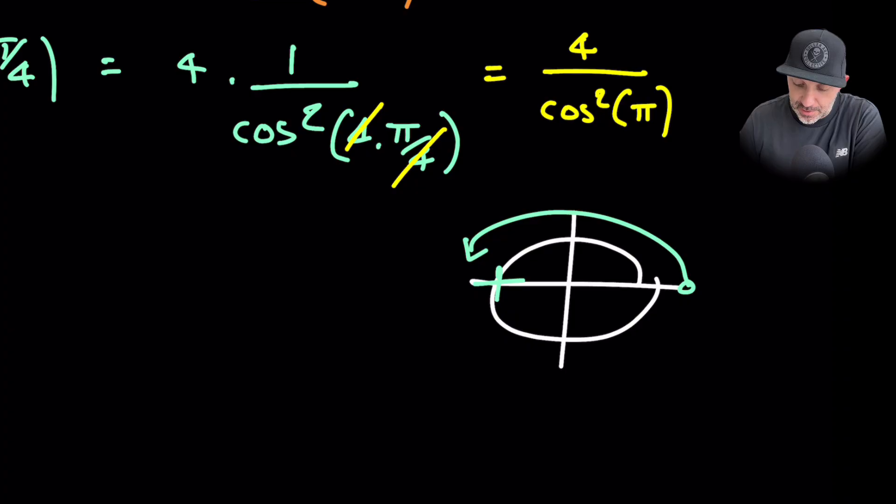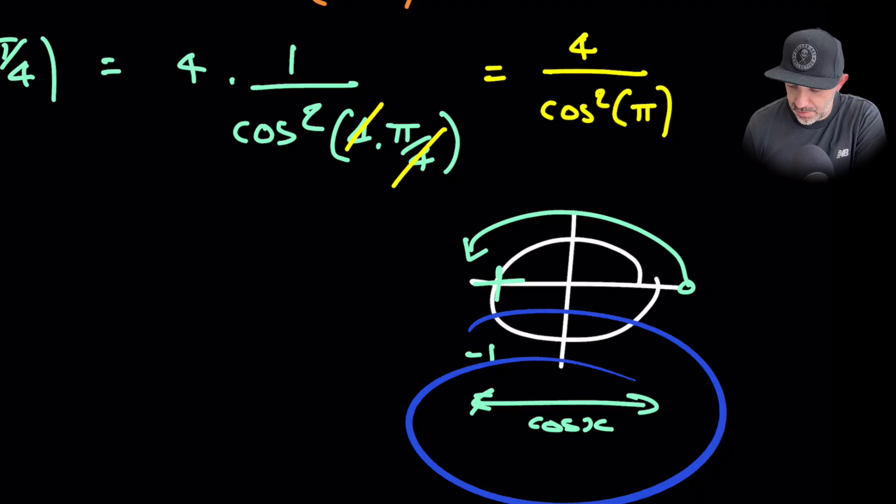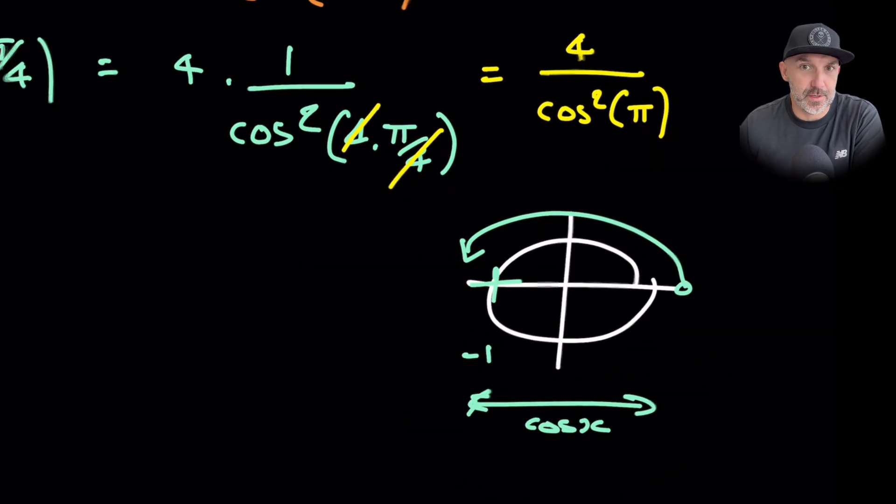And that is minus 1. Because remember, horizontally is cos. And so if we are on the left, then that is minus 1.